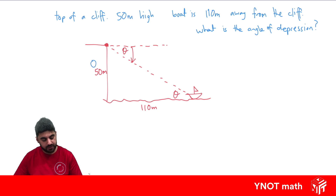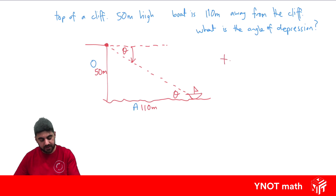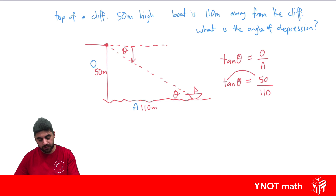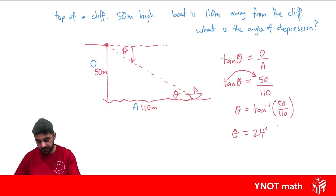This side is opposite the angle we're referencing, and this side is adjacent to the angle. The trig function that uses opposite and adjacent is tan, so tan(θ) = opposite/adjacent = 50/110. We move tan over by making it an inverse tan, so θ = tan⁻¹(50/110), and we get theta equals 24 degrees to the nearest degree.